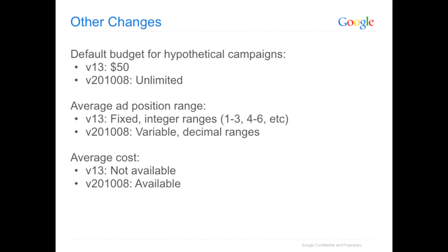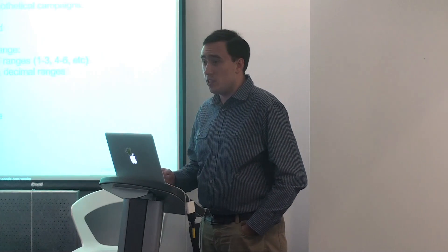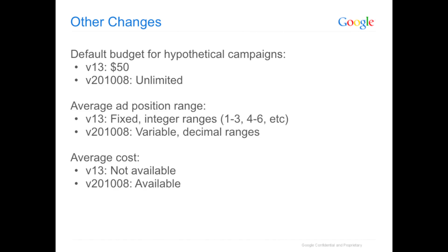Some other changes: in v13, it always assumed you had a budget of $50. So if you set a very high max CPC on a popular keyword, it would cut you off saying don't expect more clicks than this. In v2108, the budget is effectively unlimited — it will tell you how many clicks you can expect with infinite budget. Additionally, average ad position has changed from a fixed range in v13 — where you either fell in positions one to three or four to six — to more dynamic ranges in v2108 with decimal values, more accurately indicating where you'll land. Average cost, not available in v13, is now available in v2108.